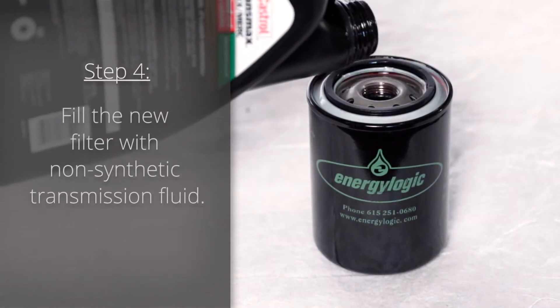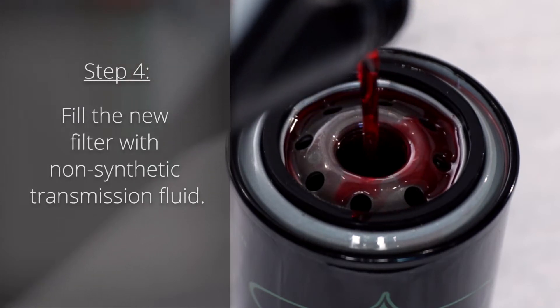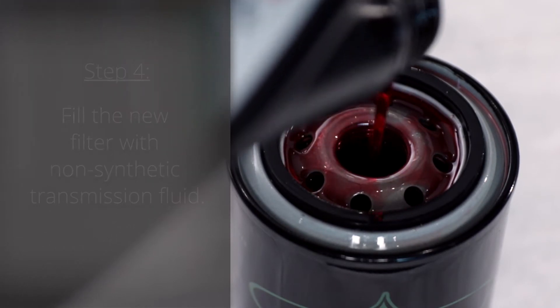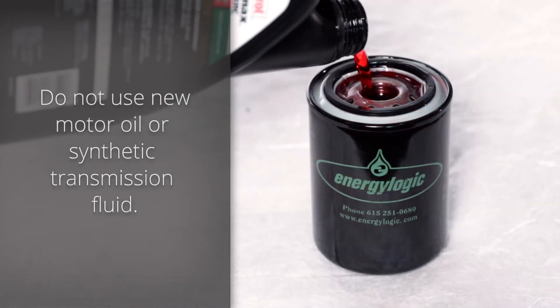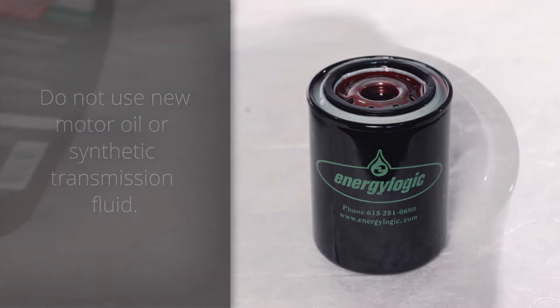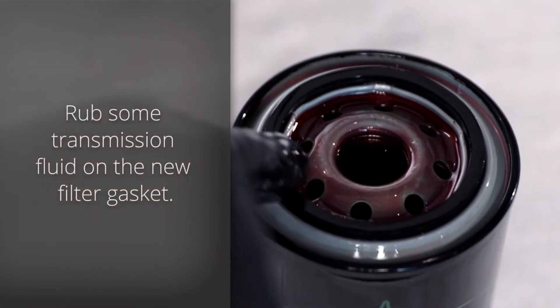Step 4: Fill the new filter with non-synthetic auto transmission fluid to quicken the priming process. Do not use new motor oil or synthetic transmission fluid. Rub some of the transmission fluid on the new filter gasket.